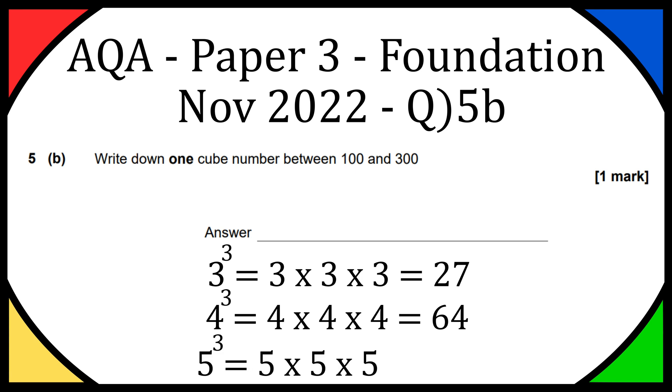Let's try 5 cubed, so 5 times 5 times 5, that gives us 125. So that is a cube number between 100 and 300.